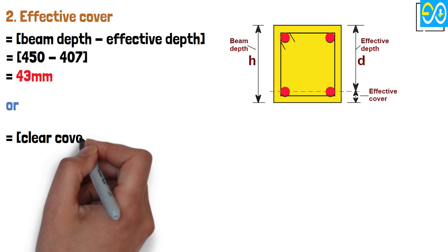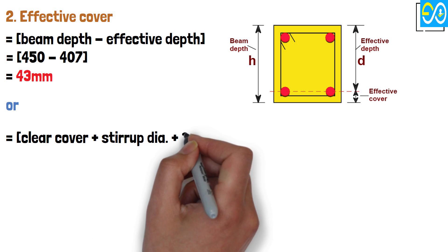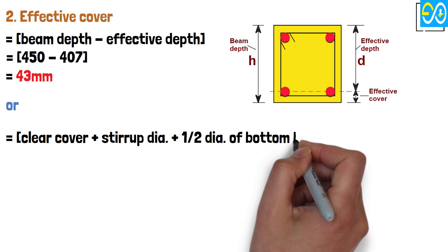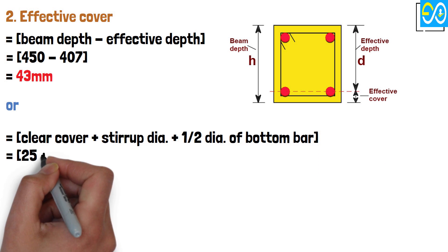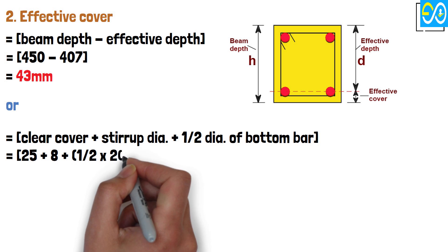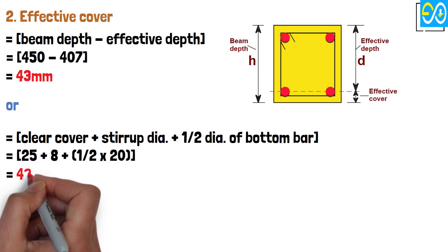Effective cover equals clear cover plus stirrup diameter plus half diameter of bottom bar equals 25 plus 8 plus half times 20 equals 43 mm.